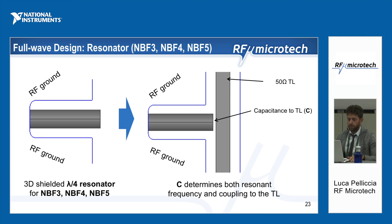I will now show you the design of the different resonators. I'll start with the resonator used for notch band filters 3, 4, and 5 — the higher frequencies. The idea was to use a lambda-over-4 resonator realized using a metal post shielded in a cavity, short-circuited at one end and open at the other. This post is coupled to the transmission line by the distance between the line and the open end of the post, giving a capacitance that determines the coupling and also affects the resonant frequency.